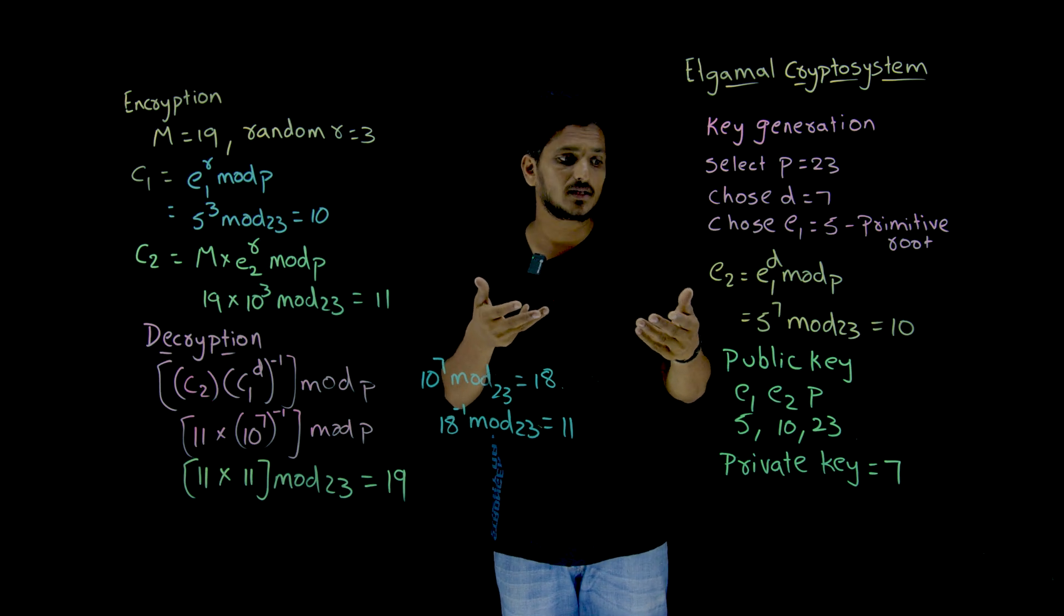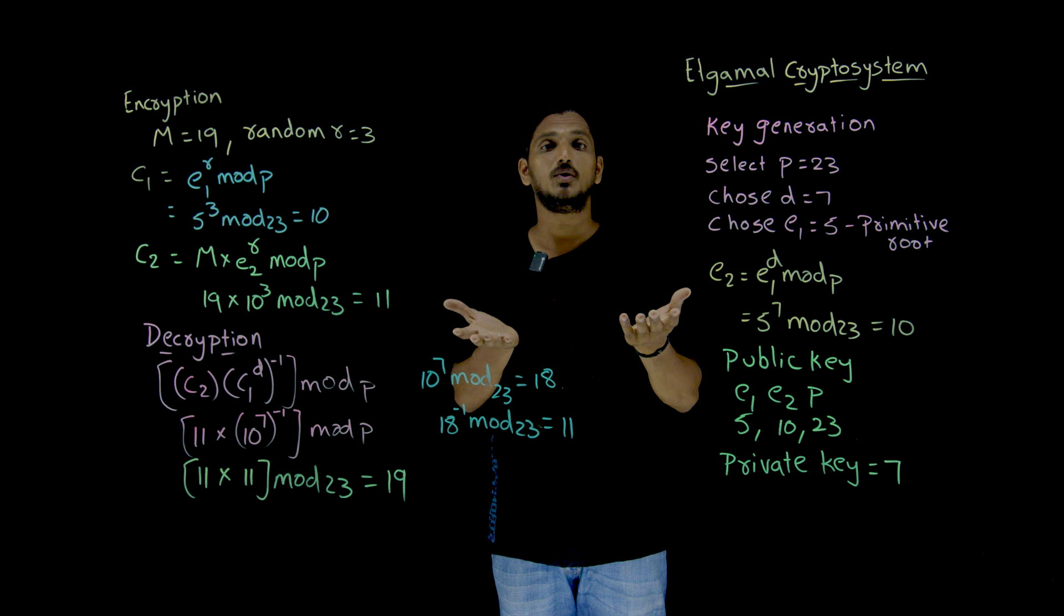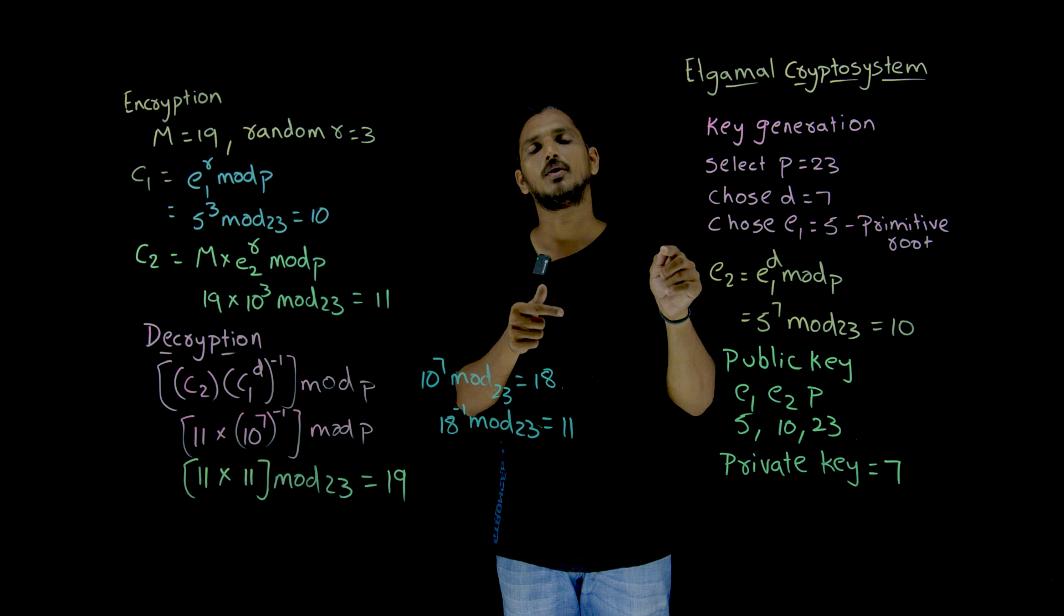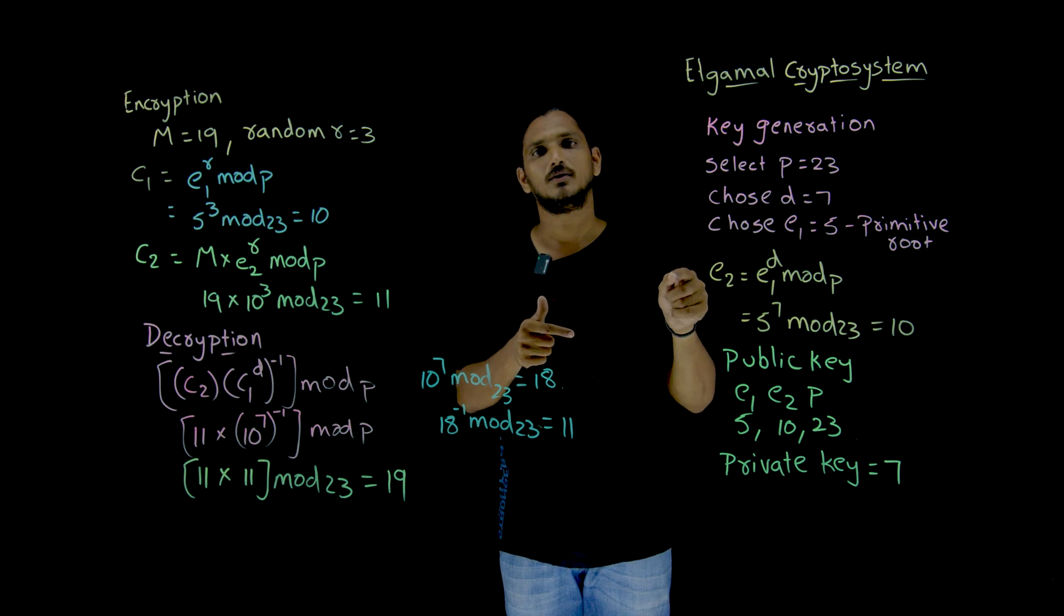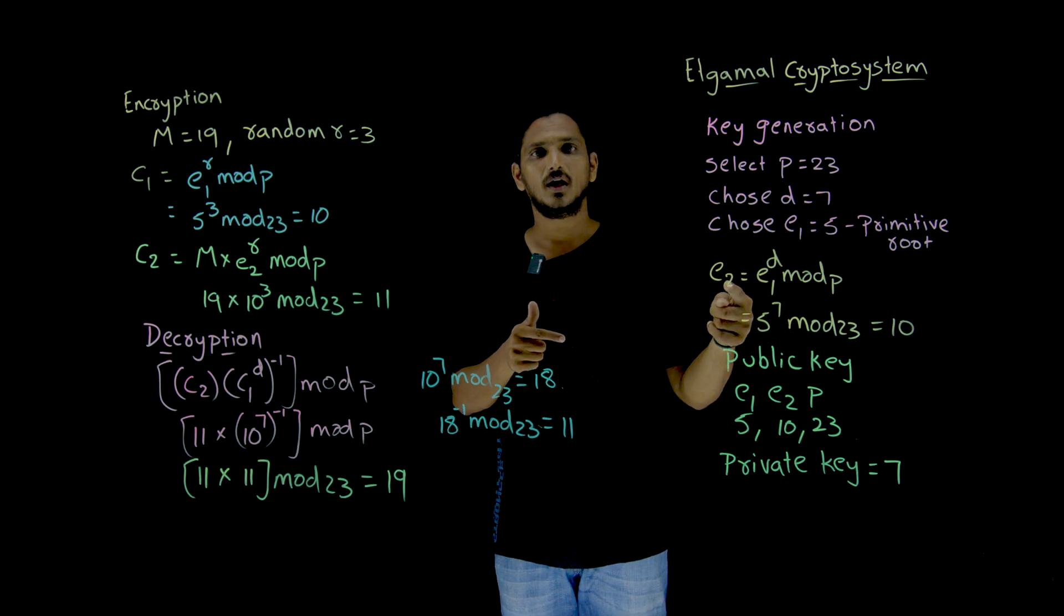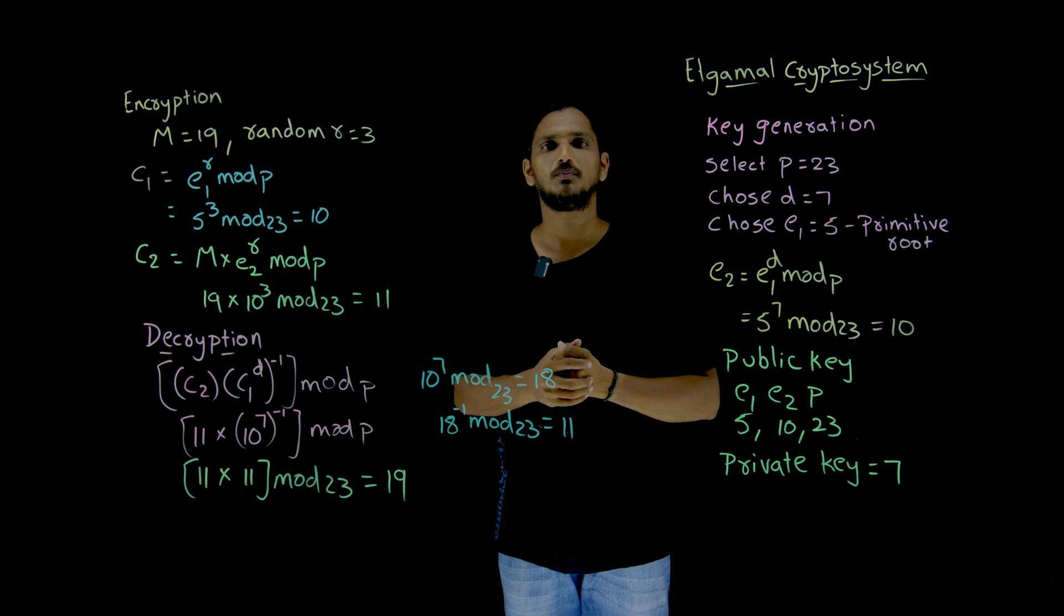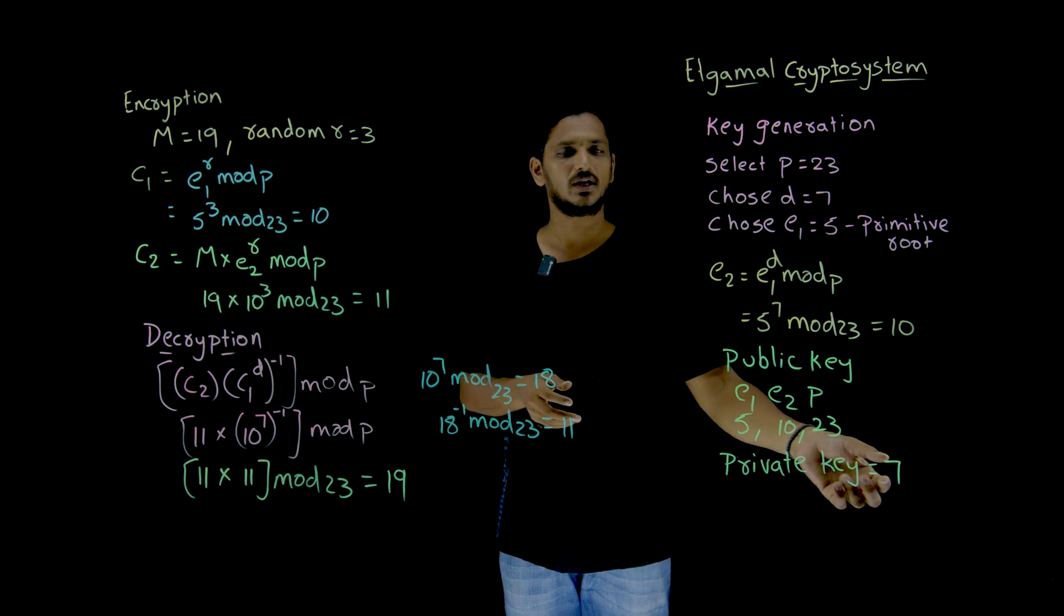Even though hackers identified E2, they are not able to identify D. Private key cannot be identified from this because it is a logarithmic problem. So E1, E2, P can be supported as public key and private key is 7.